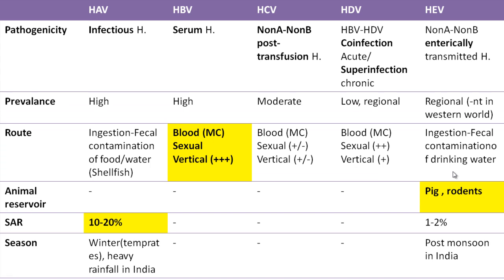Pathogenicity caused by hepatitis A virus is known as infectious hepatitis, or sometimes also called enterically transmitted hepatitis. Similarly, hepatitis E virus is also enterically transmitted, called non-A non-B enterically transmitted hepatitis. Hepatitis B virus causes serum hepatitis, and hepatitis C virus causes non-A non-B post-transfusion hepatitis.